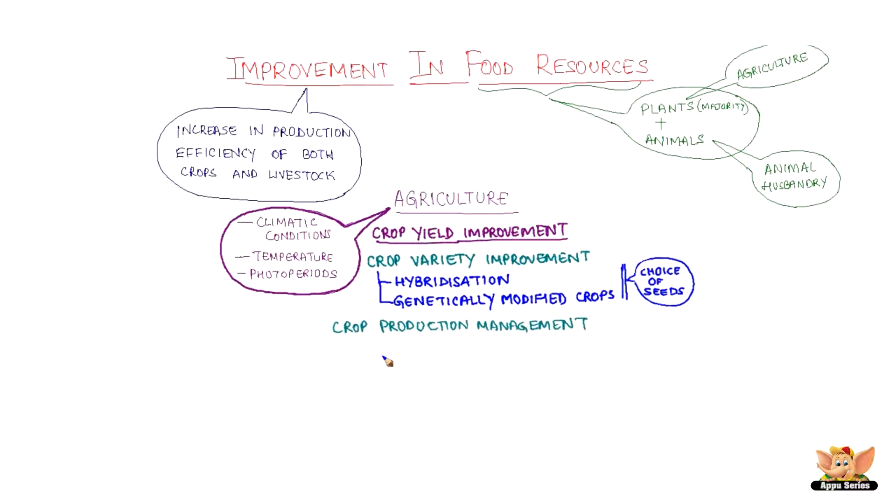The next step is crop production management, having nutrient management, irrigation and cropping patterns as its activities. This forms the nurturing of the crops.